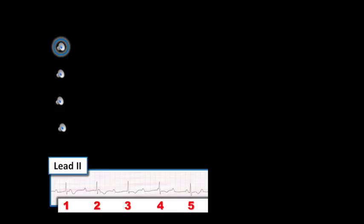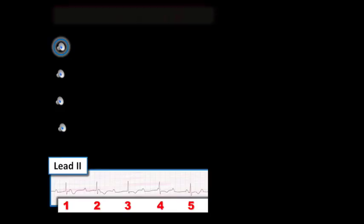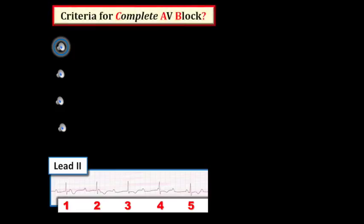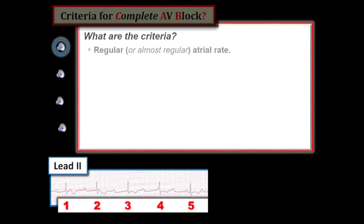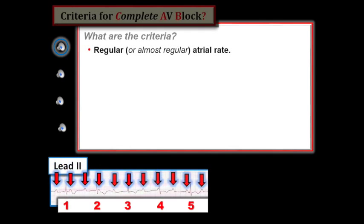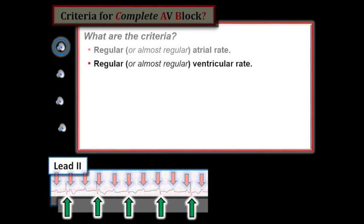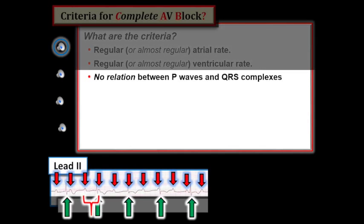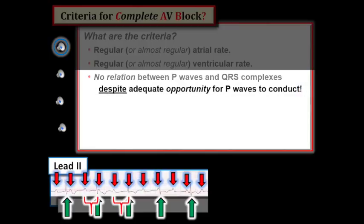Let's get back to this case. We initially showed the first five beats and asked if these provided enough ECG evidence for definitive diagnosis of complete AV block. We reviewed the criteria for complete AV block, which include a regular or almost regular ventricular rate, and no relation between the two, such that P-waves are completely unrelated to neighboring QRS complexes despite adequate opportunity for at least some P-waves to conduct. Each of these criteria is met for the first five beats, except for this last disclaimer: have P-waves truly had an adequate chance to conduct by occurring at all points in the cardiac cycle? The answer is revealed in the last four beats of this rhythm strip.